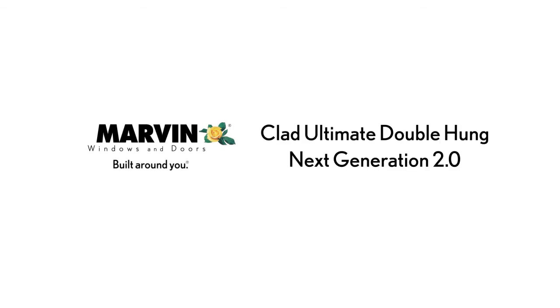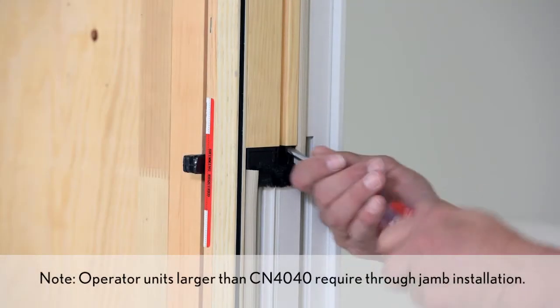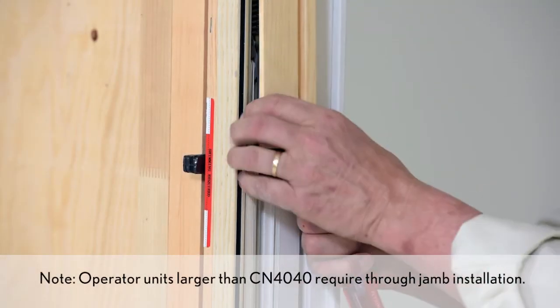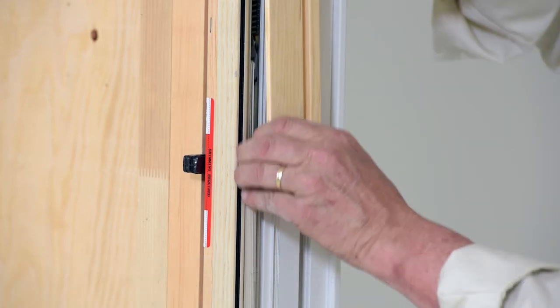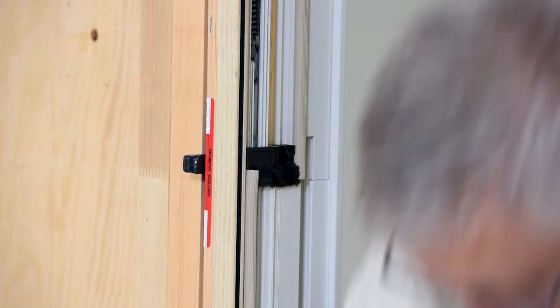Marvin Clad Ultimate Double Hung Next Generation 2.0 Through Jam Installation. Remove the interior wood covers using a flat blade screwdriver. Once the cover is released, carefully pull down on it to remove it from the end of the header parting stop.